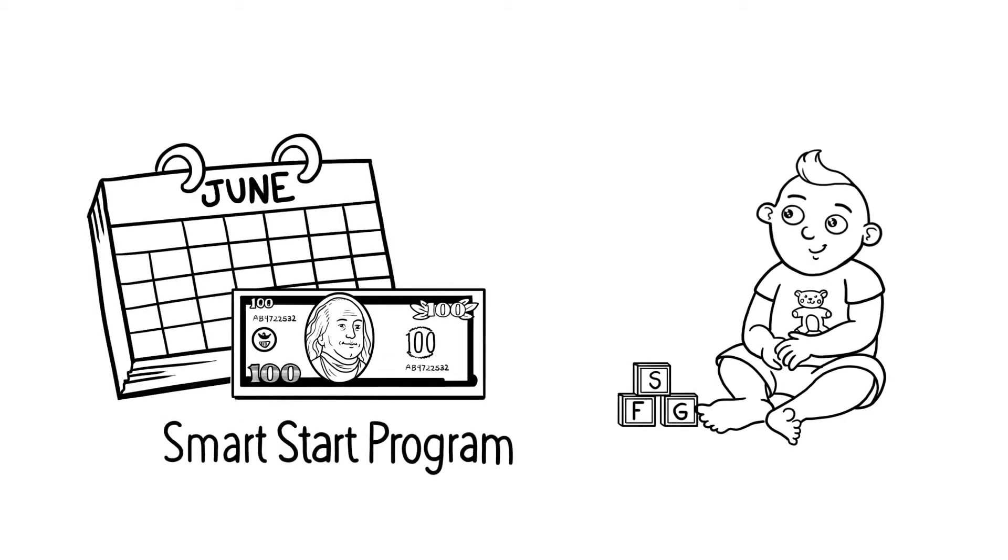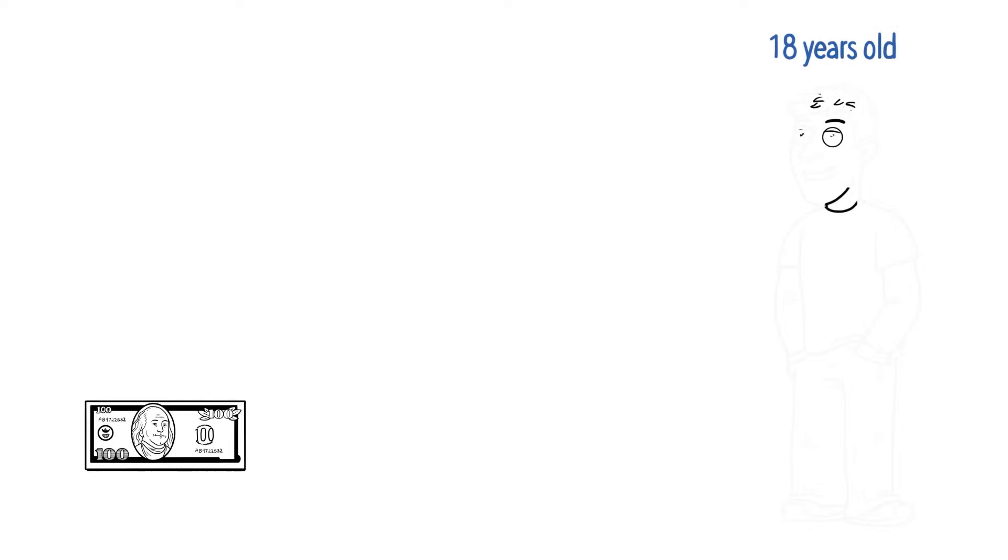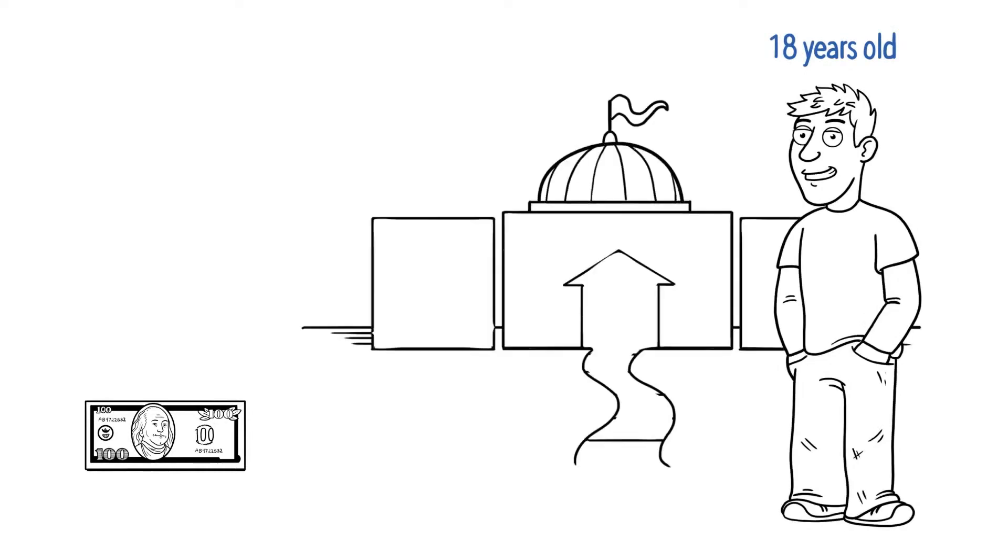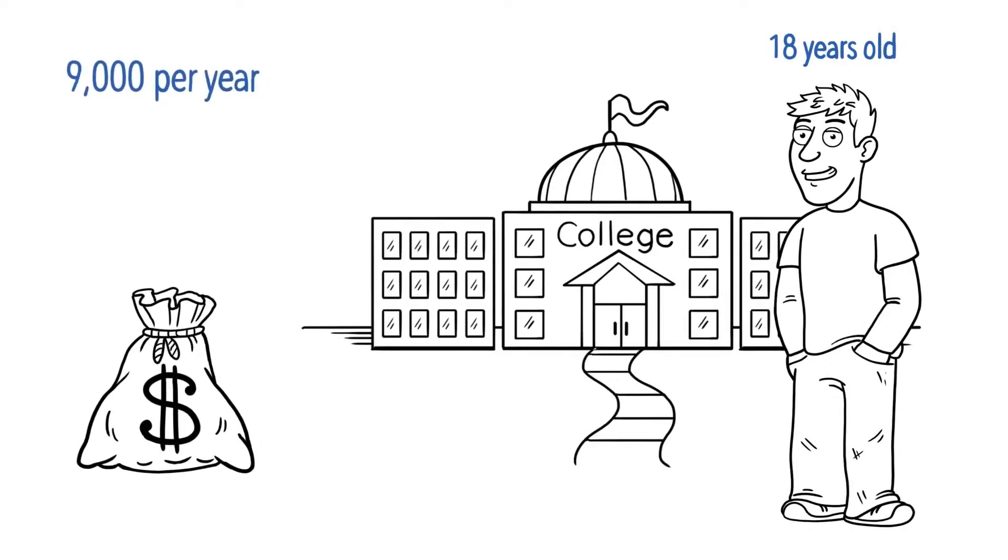But let's say you contribute $100 per month into the Smart Start program. When your child is 18, projected cash available for college will be $9,000 per year for four years tax-free. That's $36,000 in total.